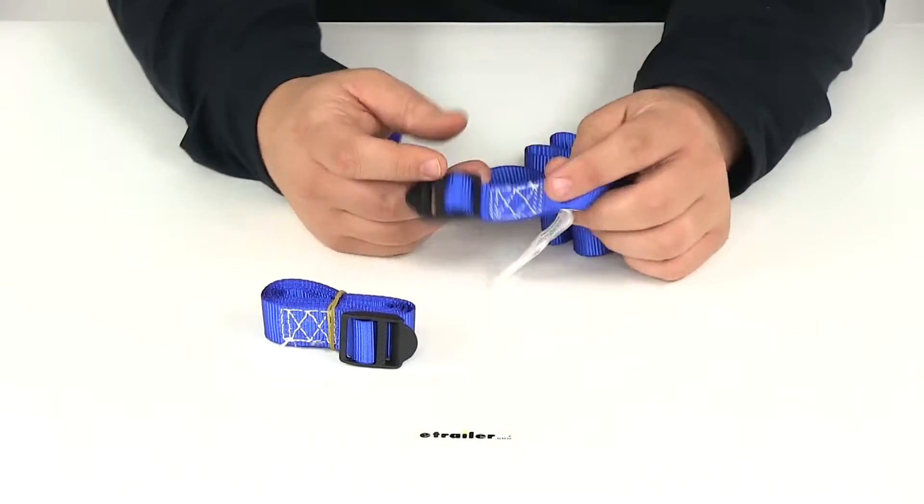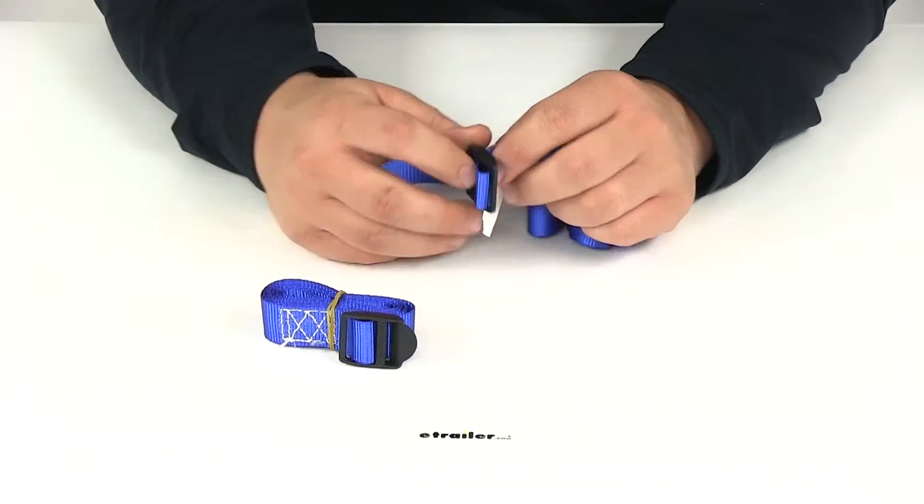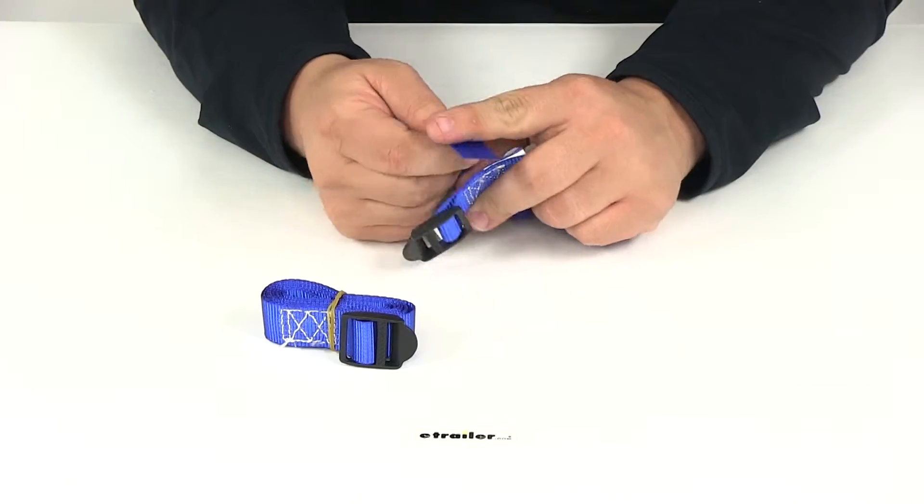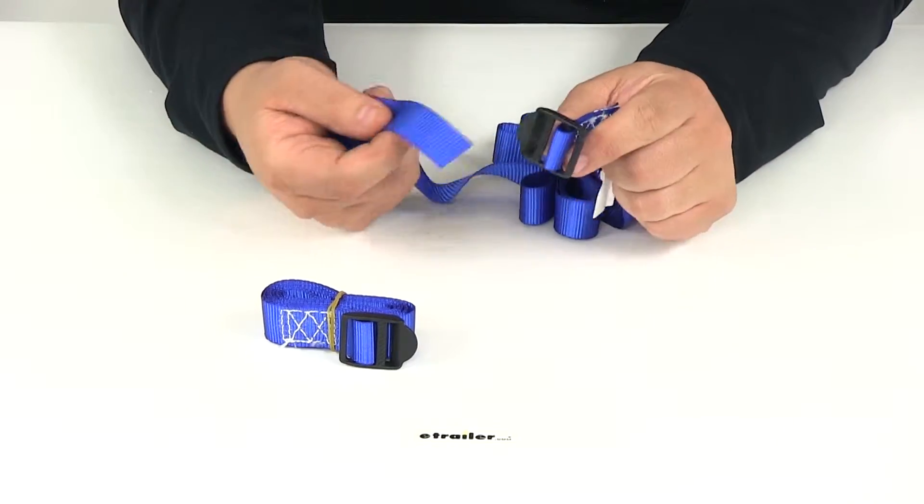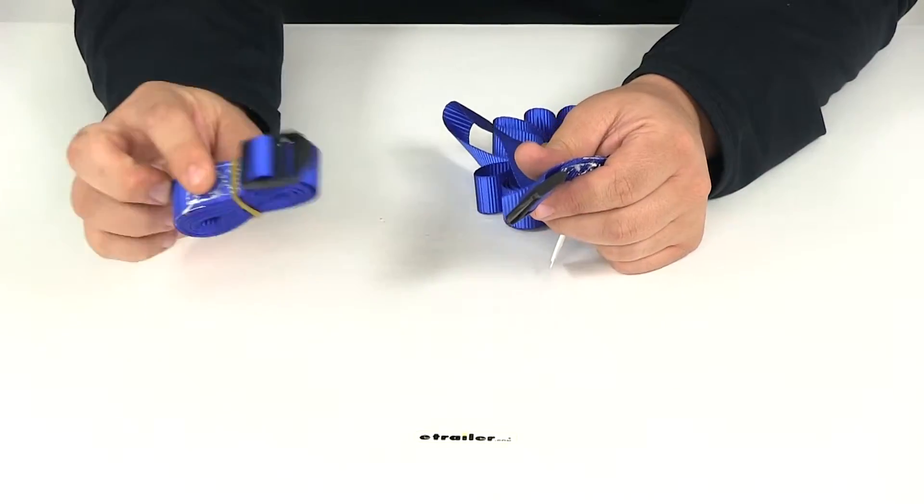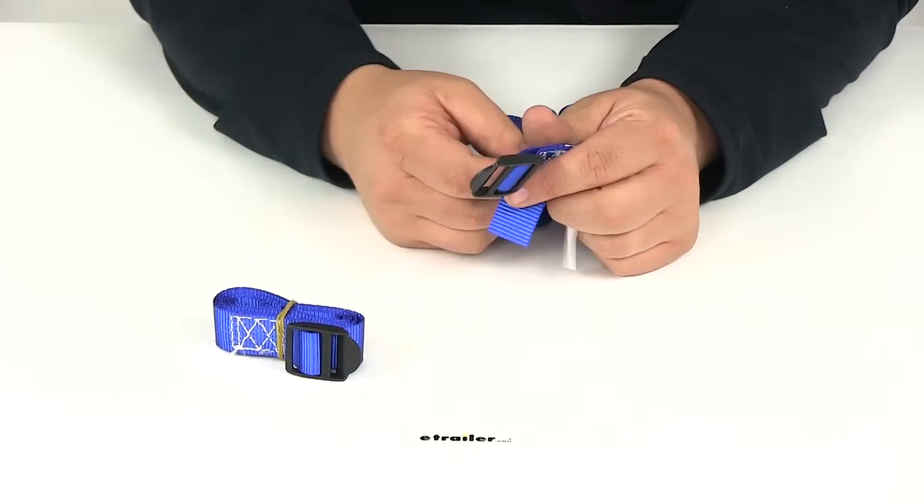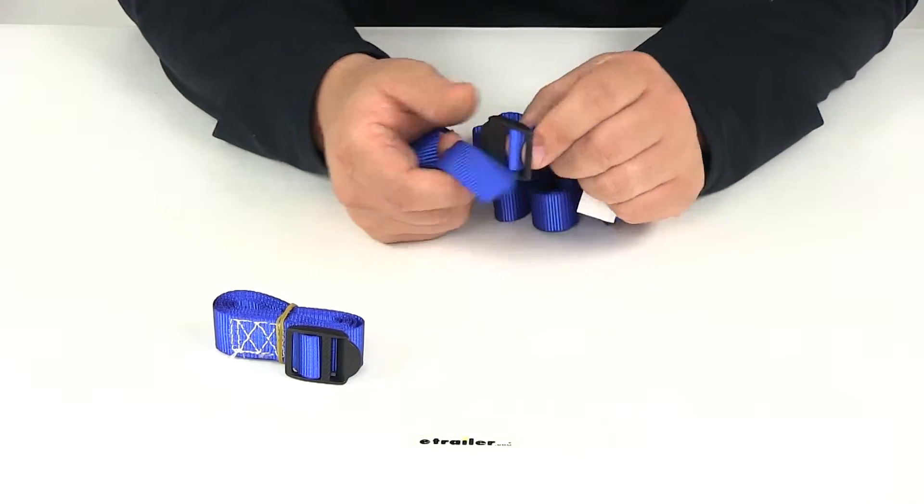You're going to have the nice slide buckles, they're very easy to use, and then on the other end you're going to have the plain end of the strap. I got one kind of undone here so we can show you how it feeds through. The other one's still bundled up just to show you that this part number does come with two straps.